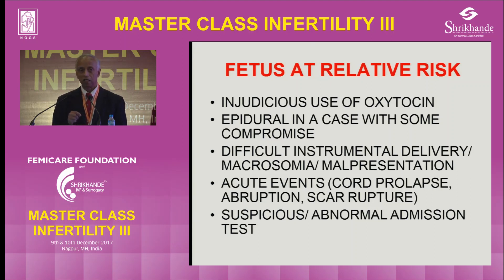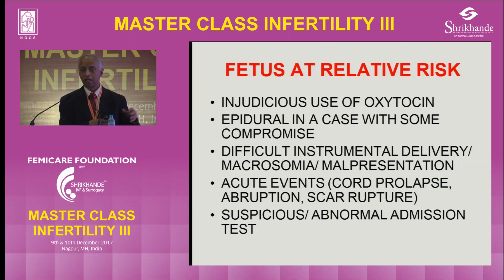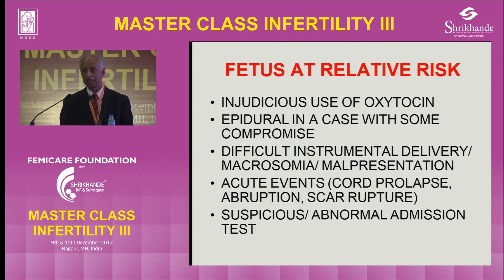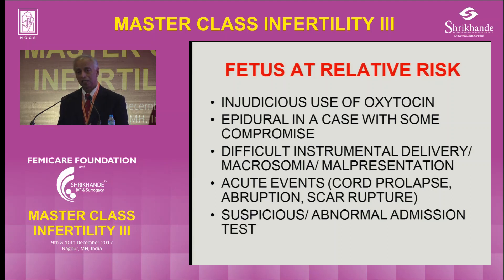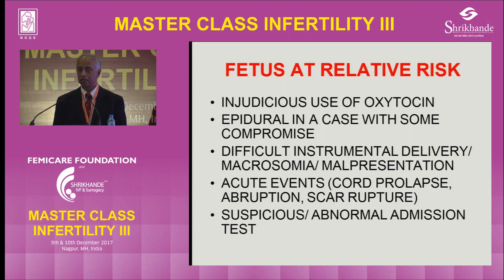One is that uterine sensitivity to the same dose of oxytocin increases with cervical dilatation. At 3 cm she may contract 3-4 times in 10 minutes; at 5-6 cm, 5 times; at 7-8 cm, 6 times; and when fully dilated, 7 times in 10 minutes — if you don't reduce the oxytocin dose. In other words, the sensitivity of the uterus to the same dose of oxytocin increases with cervical dilatation.